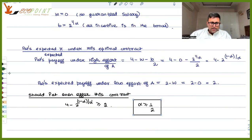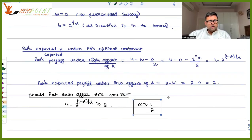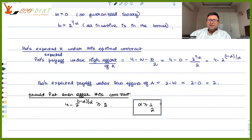So this was the principal-agent problem. I hope this was useful. You will have to see those two or three recordings together in order to make sense of all of this. I think this covers chapter 25. Thank you.